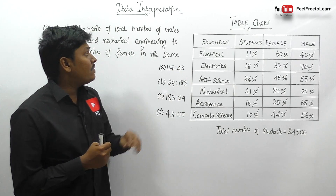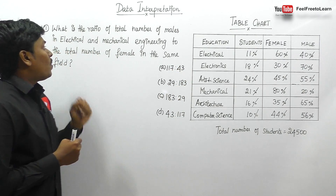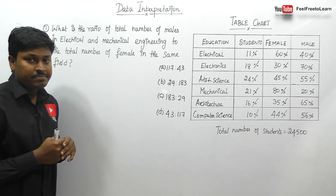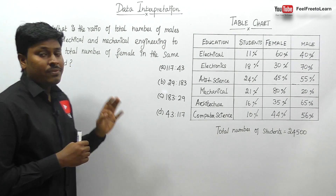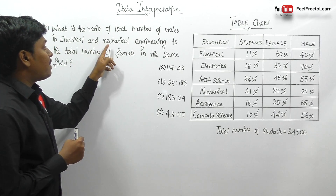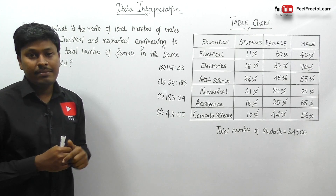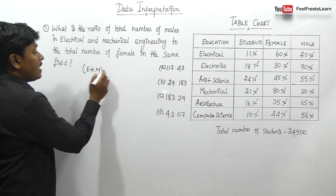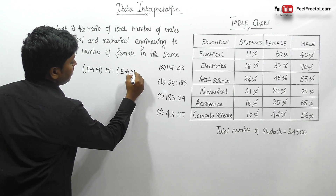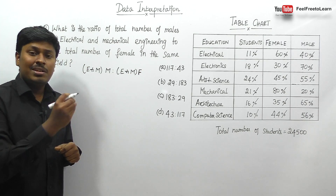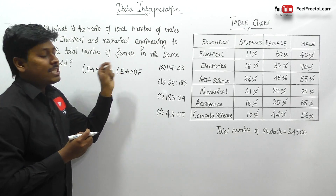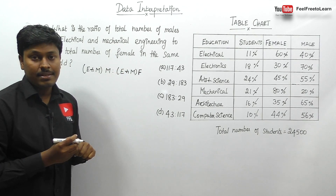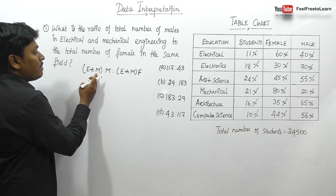Let me move on to the first question of this table chart: what is the ratio of total number of males in electrical and mechanical engineering to the total number of females in the same field? Our target is to find: (electrical + mechanical males) is to (electrical + mechanical females). If you solve this by a normal method, it will take more than two and a half minutes. There is a faster method.